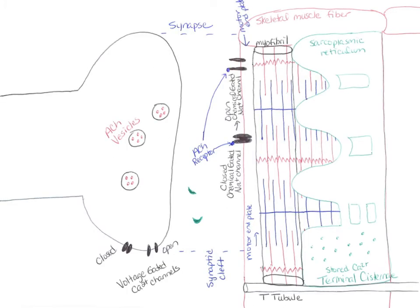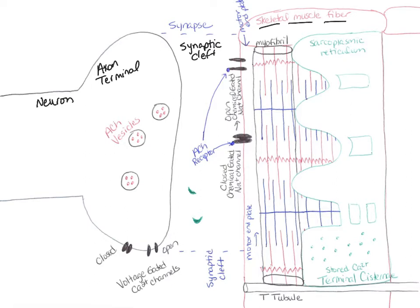We're going to start by looking at this drawing and get ourselves oriented. This is our neuron over on this side, and this is the axon terminal or the synaptic terminal. Then we have a space here, and that space is called the synaptic cleft. Then we have the muscle on the other side, and the muscle is made of skeletal muscle fibers. Fibers are muscle cells.